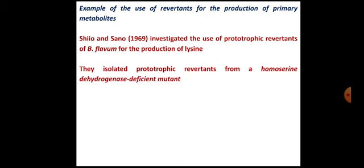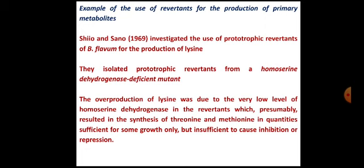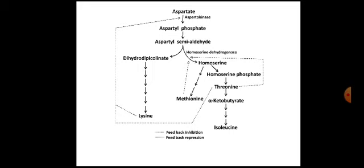These auxotrophic mutants are exposed to a mutagenic agent to generate revertent mutants. In order to understand this, we need to go back to the biochemical pathway which we have already studied. The overproduction of lysine was due to the very low level of homoserine dehydrogenase in the revertents, which presumably resulted in the synthesis of threonine and methionine in quantities sufficient for growth only, but insufficient to cause inhibition or repression. We need to see the biochemical pathway to understand this fully.